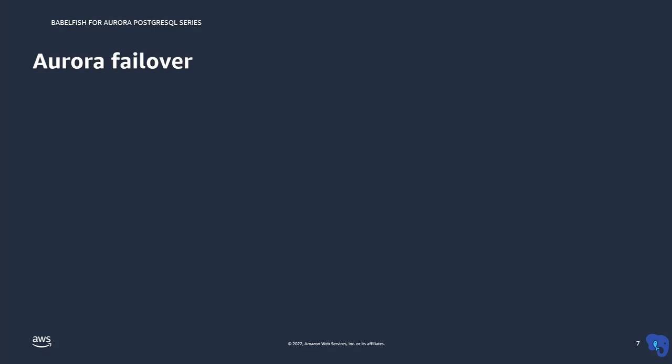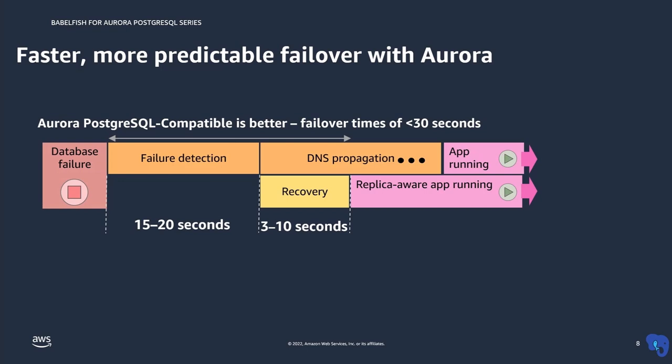Let's look at fast failover in Aurora. The failover is faster because it does continuous recovery at the backend. The typical failover time in Aurora is less than 30 seconds for most workloads, as it takes 3 to 10 seconds to recover the database during a failover event. This brings fast failover in case of any disaster.